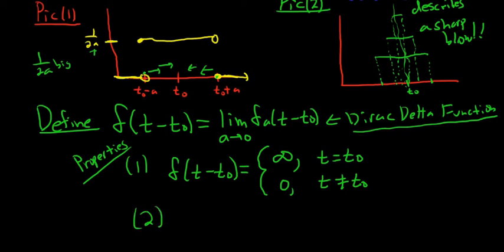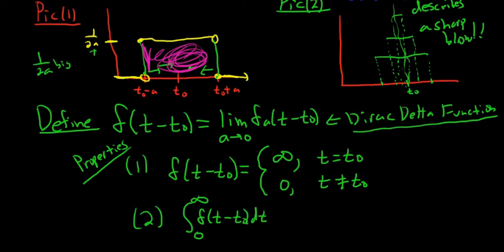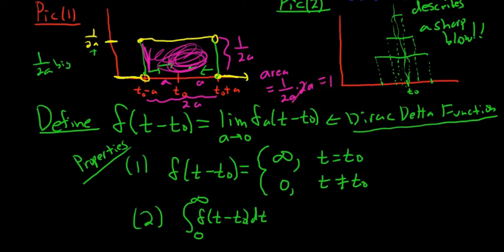Property two: if you integrate this from 0 to infinity, integration can be thought of as area. We're finding the area of the rectangle — the height is 1 over 2a, and the width is 2a (a on each side of t₀). So the area is length times width: 1 over 2a times 2a equals 1. So the area is equal to 1, meaning this integral equals 1.